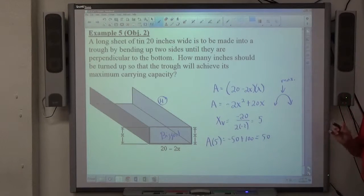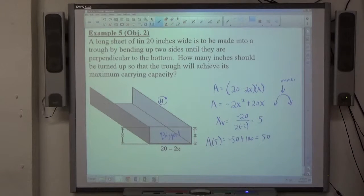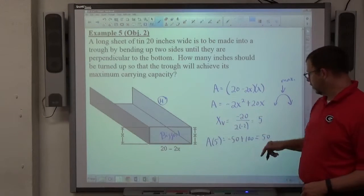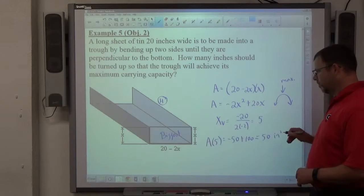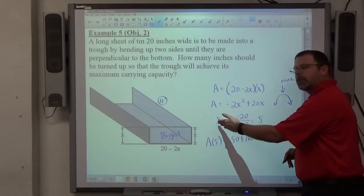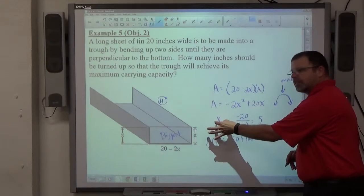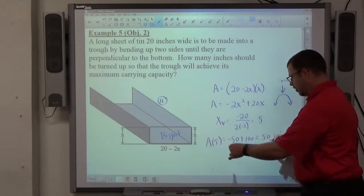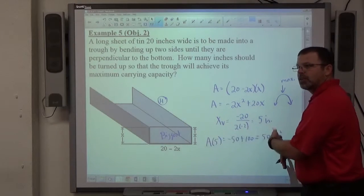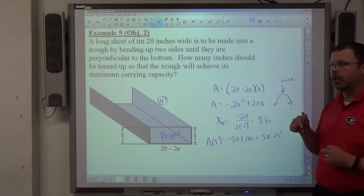Now it's important we answer the question. The maximum area that is possible is 50 square inches. Because if I'm putting x in, I'm getting A out. x is a dimension, so it's inches. A is an area, so it's inches squared. So we're getting ordered pairs like that.